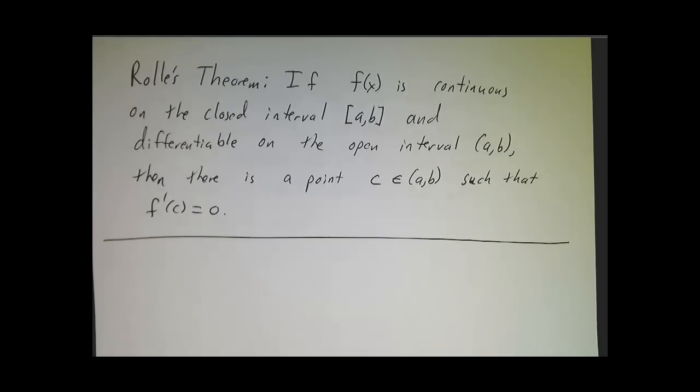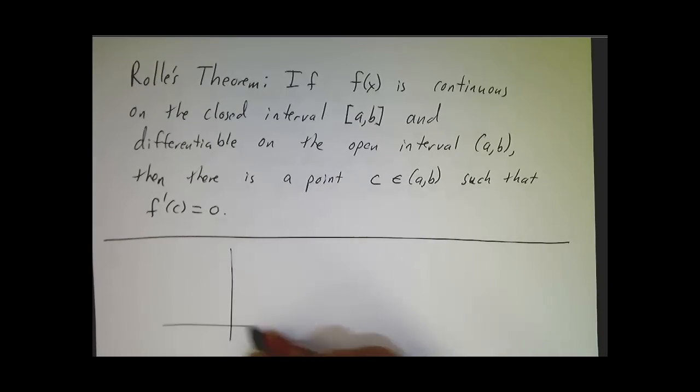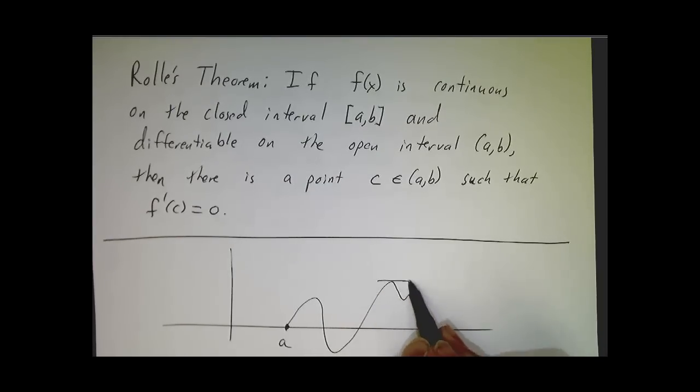Our next theorem is called Rolle's Theorem. It says that if we've got a function, let me draw a picture of it. We've got a function that starts off at zero and ends up at zero, then somewhere in the middle, we don't know where, there's a spot where its derivative is zero.